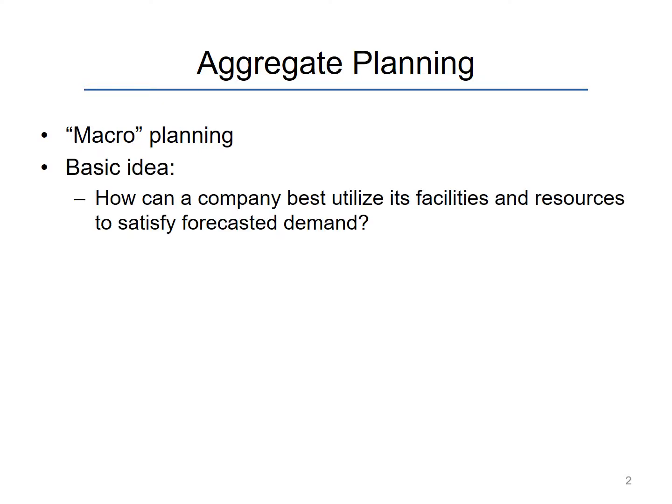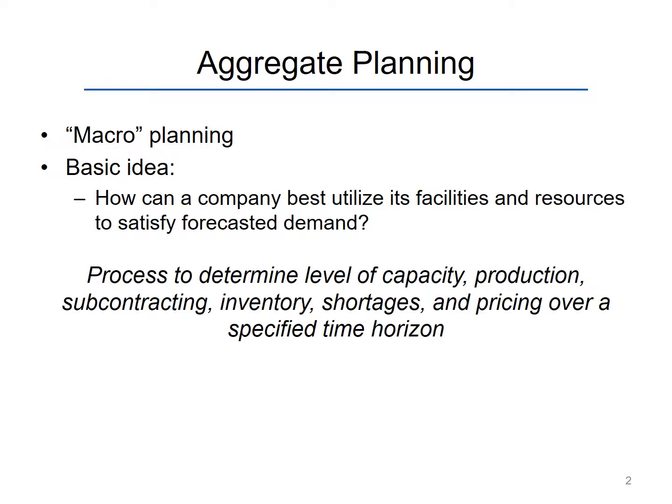Aggregate planning, which is often referred to as macro planning, centers on this basic idea: how can a company best utilize its facilities and resources to satisfy forecast demand? It starts with the premise that you have a reliable forecasting method to predict demand, and based on that forecast, how can you allocate your resources — such as production capacity, worker hours, machine hours — to create the best production plan to minimize costs or maximize profits. It's the process to determine the level of capacity, production, subcontracting, inventory, shortages, and pricing over a specified time horizon.